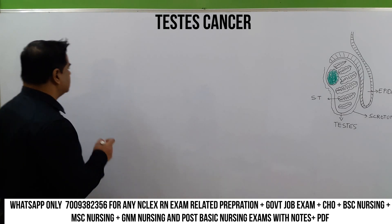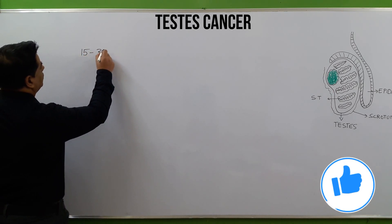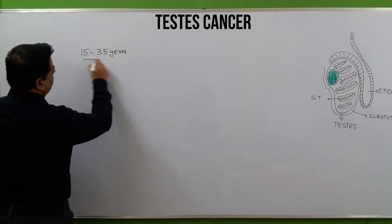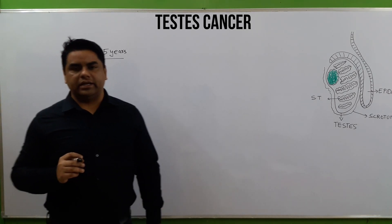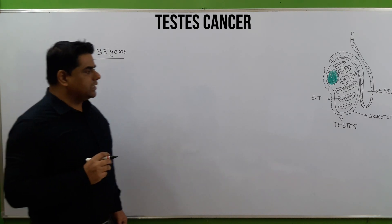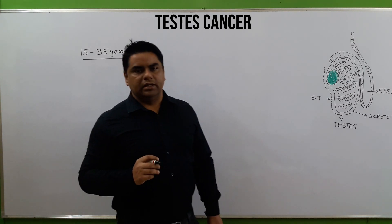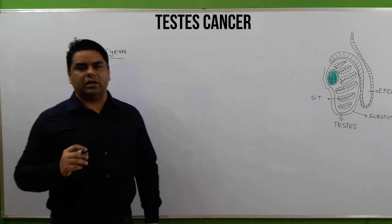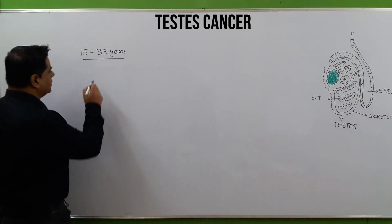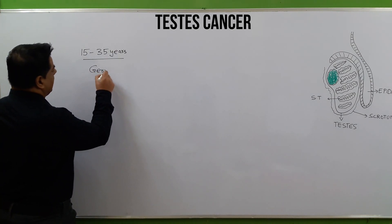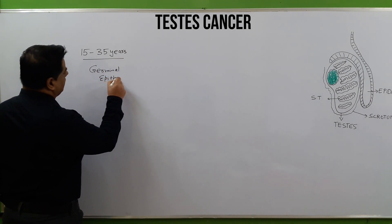Testicular cancer generally affects the age group of 15 to 35 years. It primarily affects the germinal epithelium layer — the layer of cells from where sperm are produced.